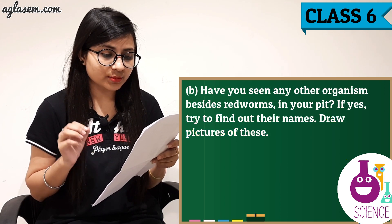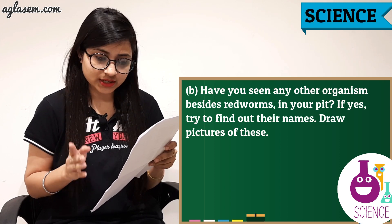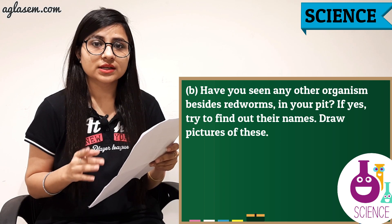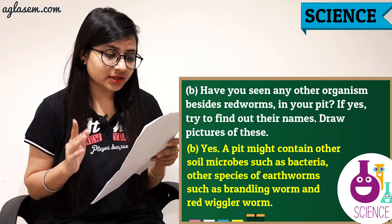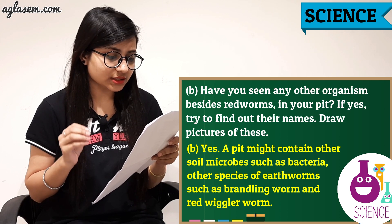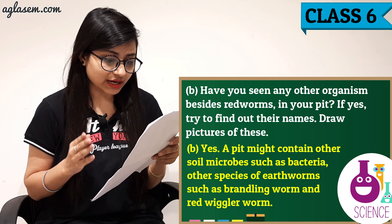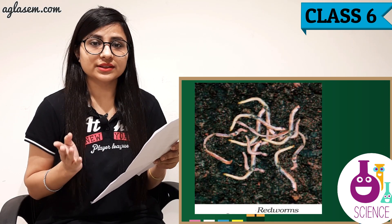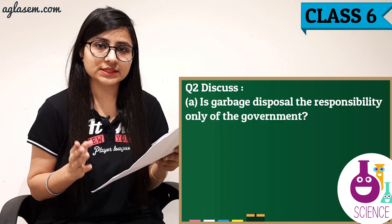Question 1b: Have you seen any other organism besides red worms in your pit? If yes, try to find out their names and draw pictures of these. The answer is yes — it might contain other soil microbes such as bacteria, other species of earthworms such as brandling worms and red wrinkle worms. The diagram is on your screen.